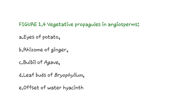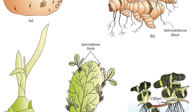Next is Figure 1.4, which shows vegetative propagules in angiosperms. A is eyes of potato, B is rhizome, C is bulbil, D is leaf bud, and the last is offset.